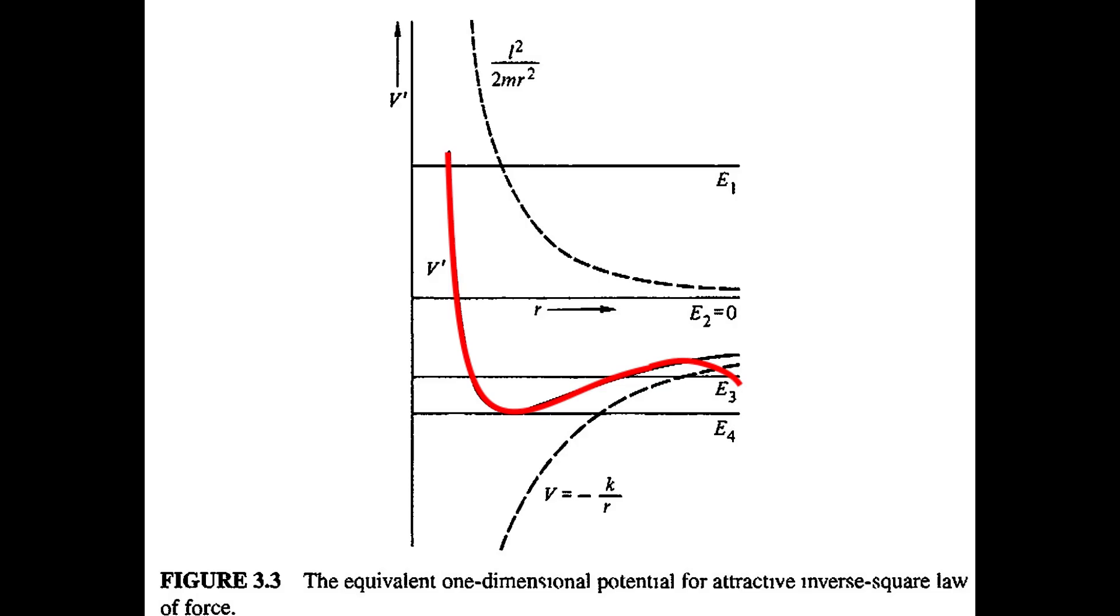The last interesting orbit is when the energy is equal to a maximum or a minimum of effective potential. This gives us circular orbits. If it's a maximum, that circular orbit is unstable because a perturbation away from the central force will cause the object to continue moving away. If the perturbation is inward, then the object will go toward and then fly away because it has enough energy now to get over that maximum.